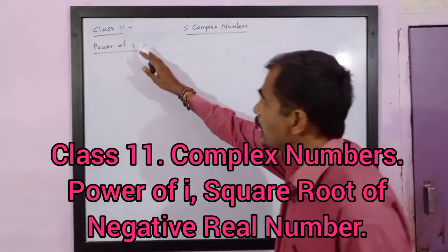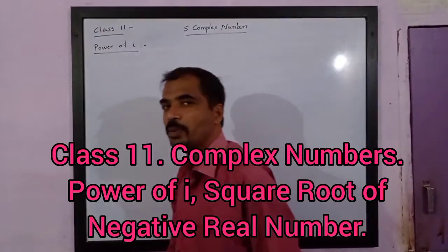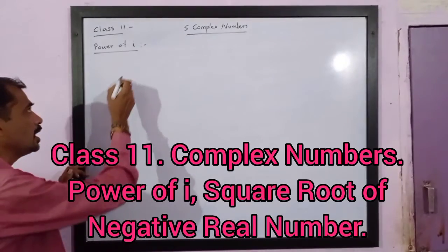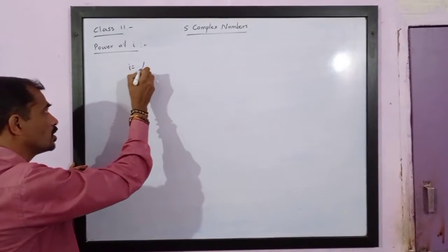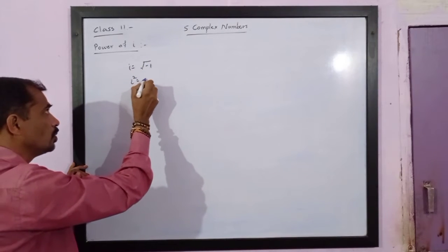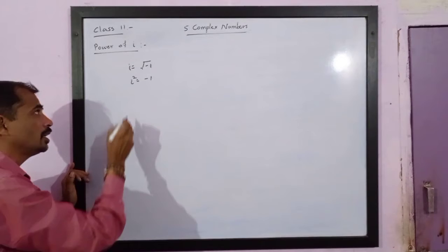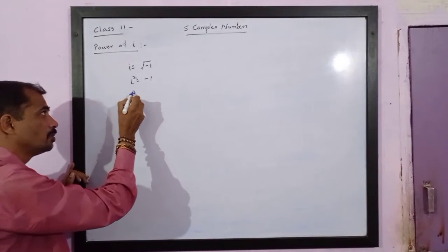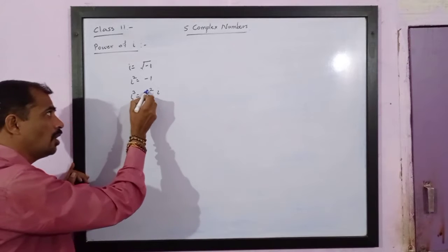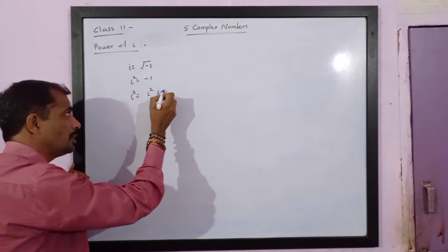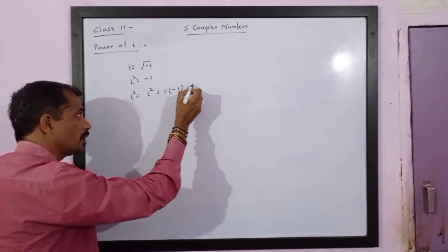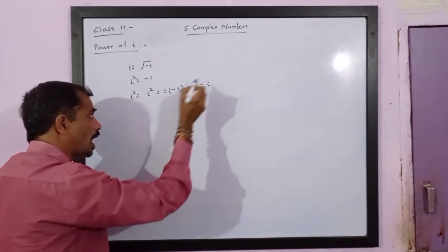Dear friends, in class 11 we are studying complex numbers and the next point is powers of i. We have already defined i, where i is equal to the square root of minus 1. It means i squared is equal to minus 1. Therefore, i cubed is equal to i squared times i. Since i squared is negative 1, this is equal to negative 1 times i, so i cubed equals negative i.